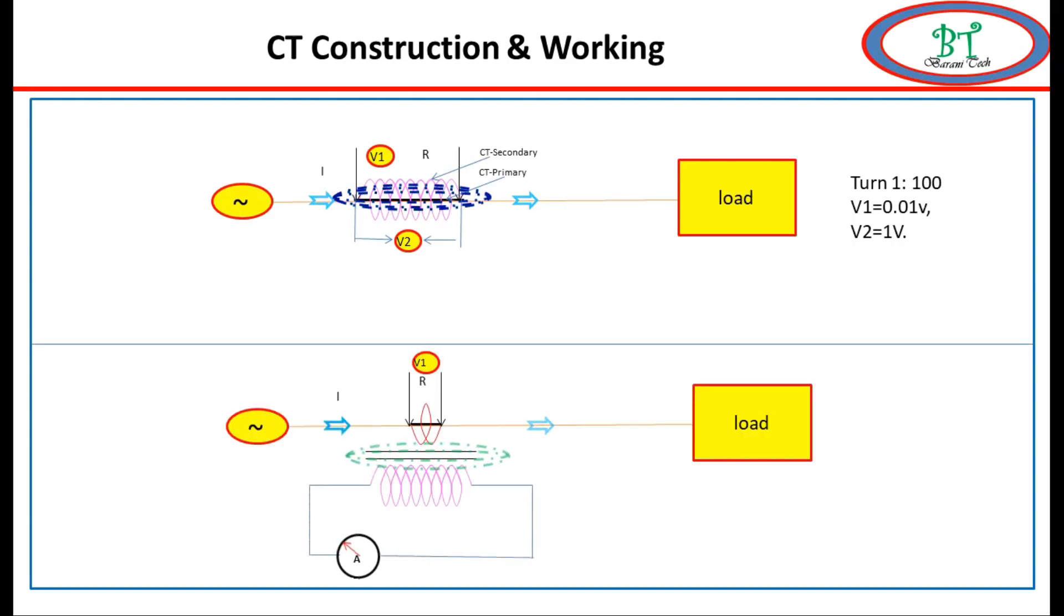The number of secondary turns is very high, so the less voltage is stepped up on the secondary side. This secondary side is shorted with metering or protection circuit. Depending on current flow on the primary circuit, the secondary voltage increases since it is a short circuit which indicates the current flow.